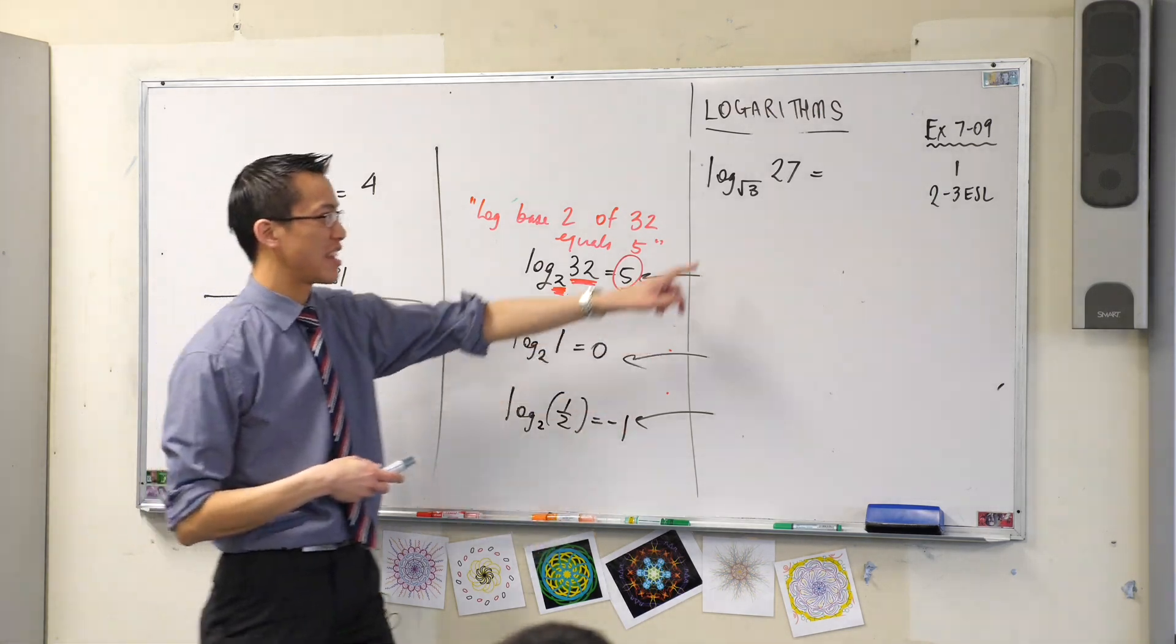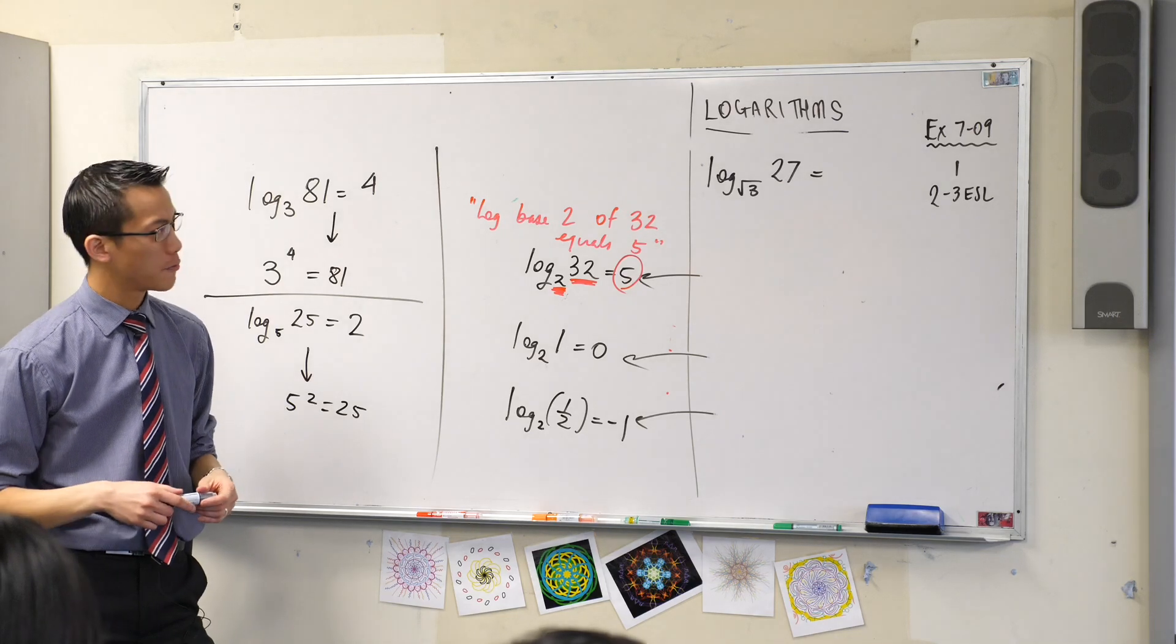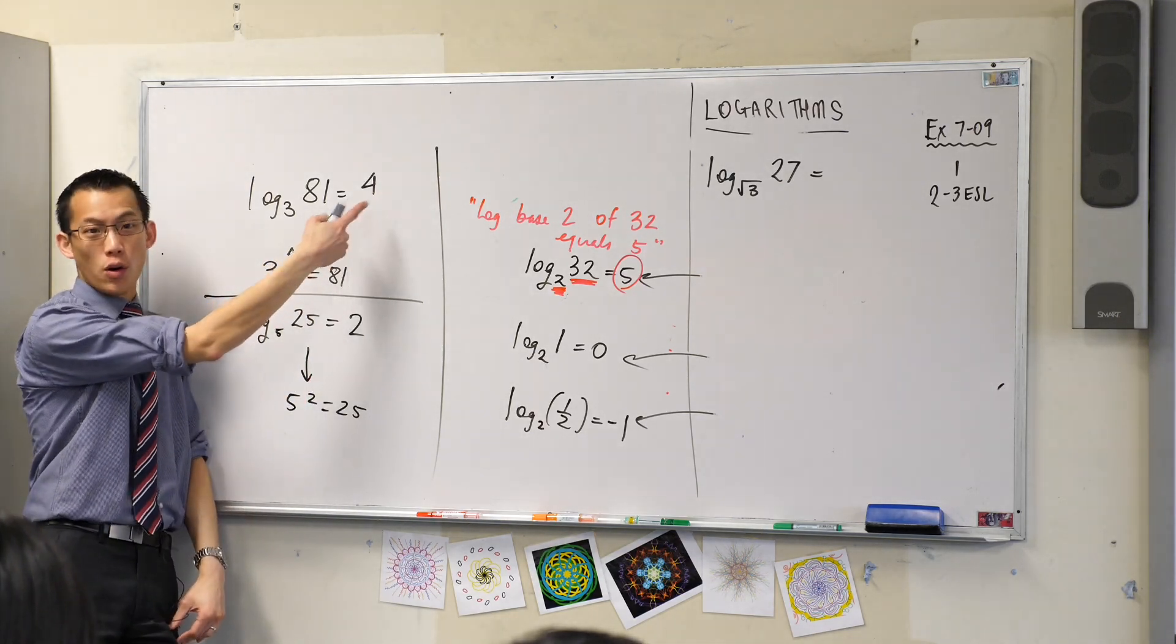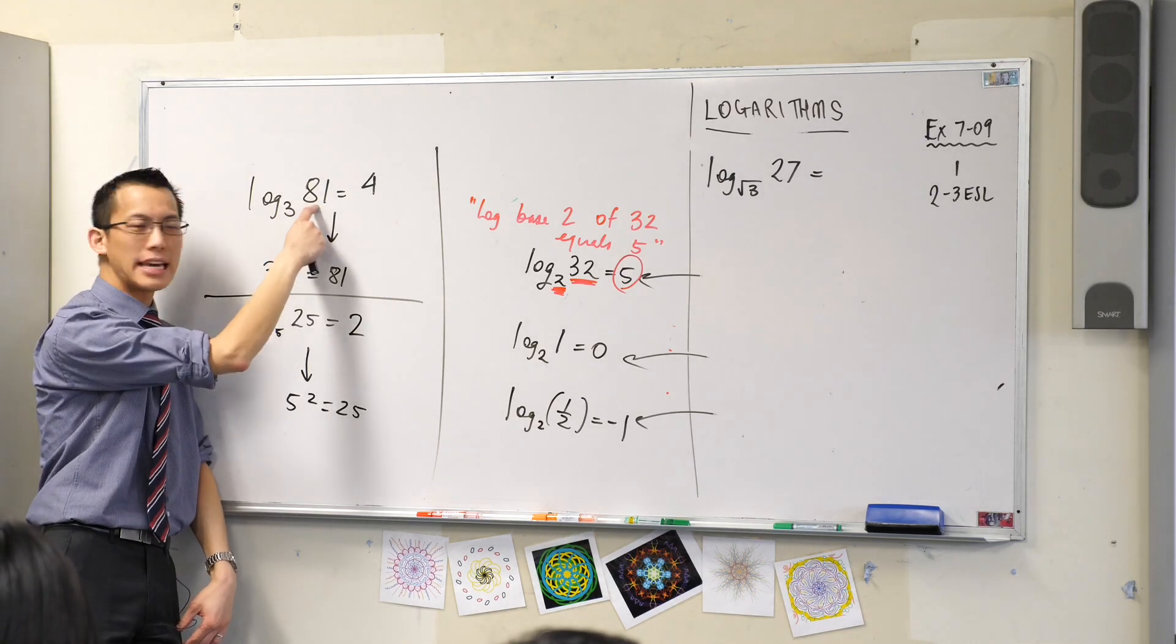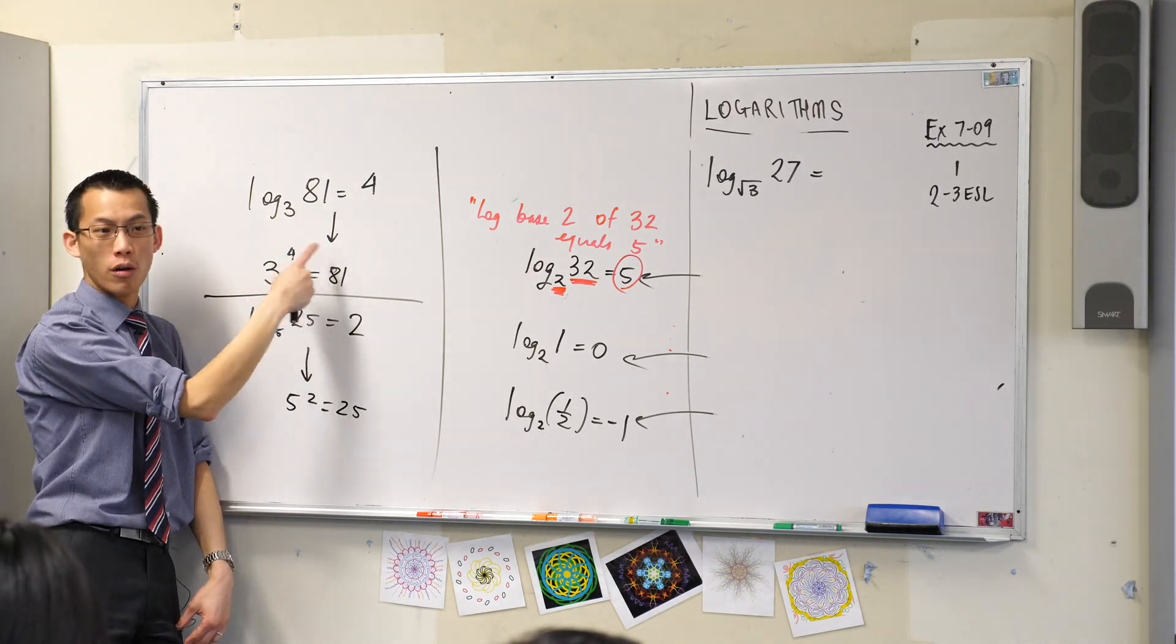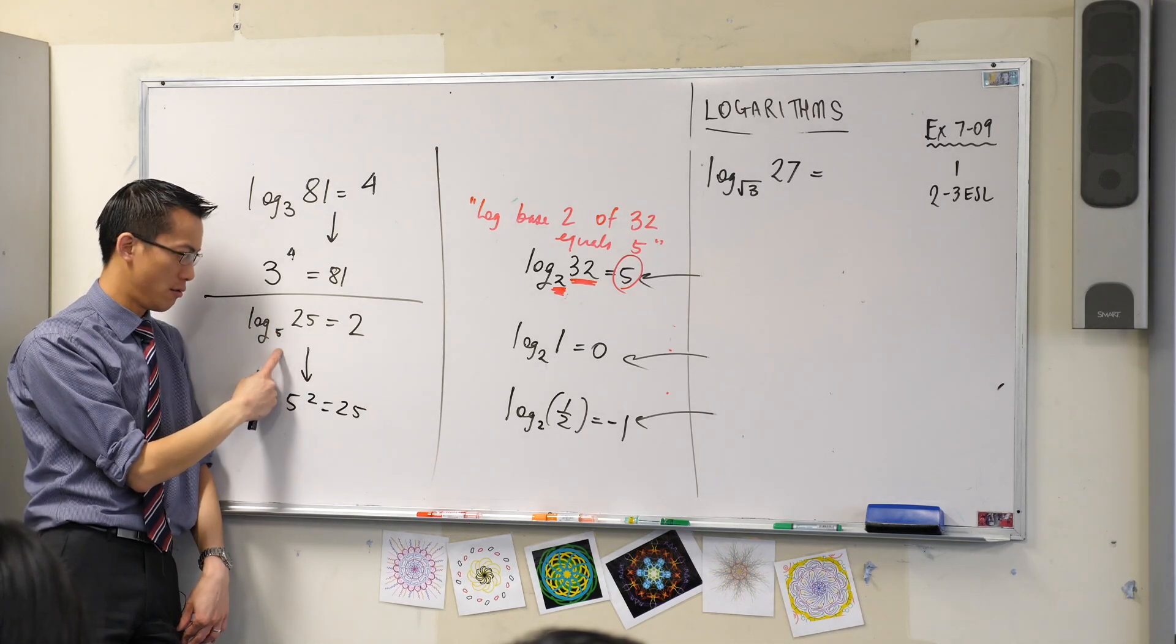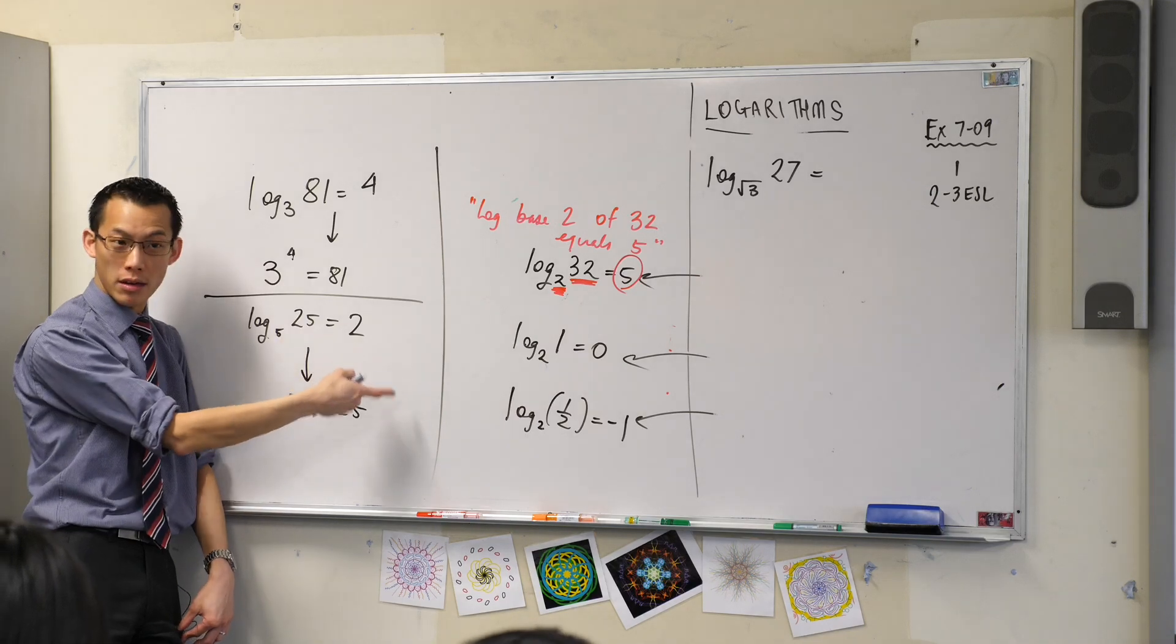Have a look. This is more challenging because look, that looks gross. That's not even a whole number. Okay, but you think about this. Just like I said over here, this number here, 4, is like what power do I have to raise 3 to to get 81? Well, 3 to the power of 4 is 81. What power do I have to raise 5 to to get 25? And the answer is 5 squared will give me 25.